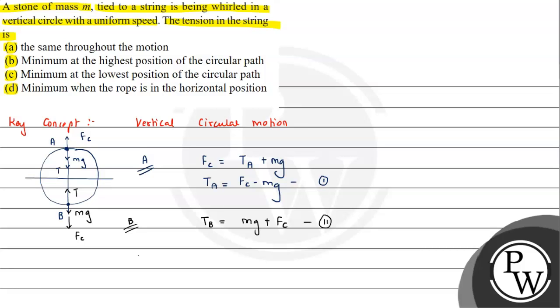If we compare equations 1 and 2, tension at the lowest point is greater than tension at the highest point. T_B is greater than T_A. That is option B, minimum at the lowest point.